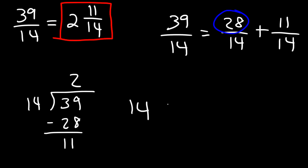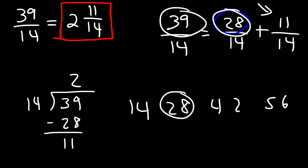Multiples of 14 are 14, 28, 42, 56. 42 exceeds 39, so this is the highest. To find a missing fraction, it's simply 39 minus 28, and that will give you 11.